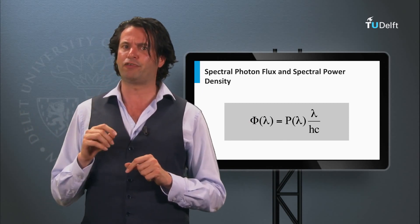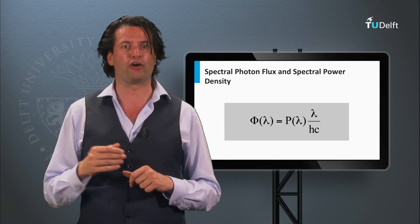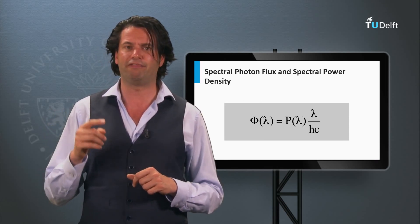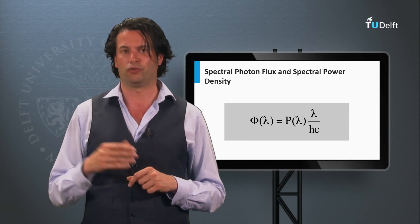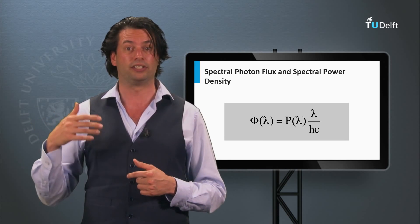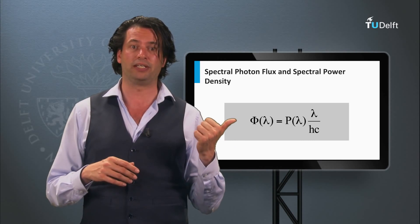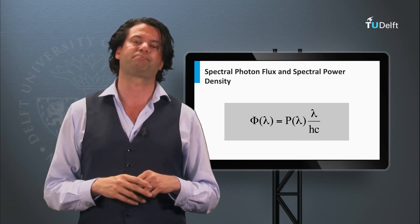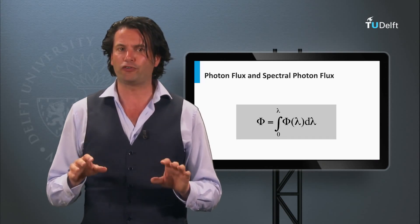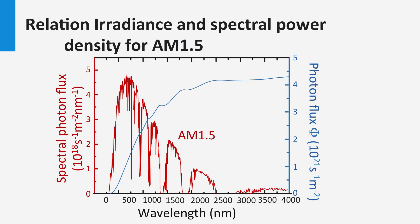The relation between spectral power density and spectral photon flux only requires the energy of a photon. The spectral photon flux at wavelength lambda is the spectral power density at wavelength lambda divided by the energy of a photon with that wavelength. The photon energy is determined by Planck's constant times the speed of light divided by the wavelength. Integrating the spectral photon flux over lambda gives the photon flux. The AM 1.5 spectrum up to 4000 nm has a photon flux of 4.3 × 10²¹ photons per second per square meter.